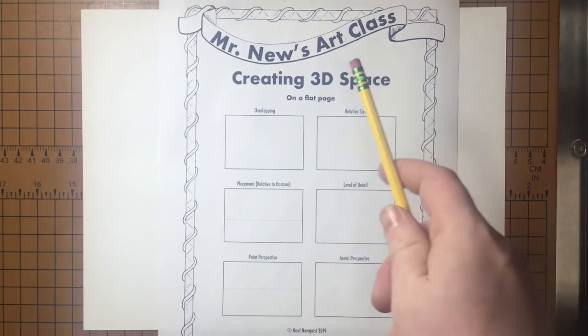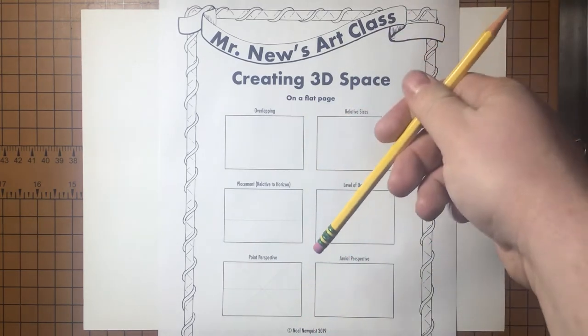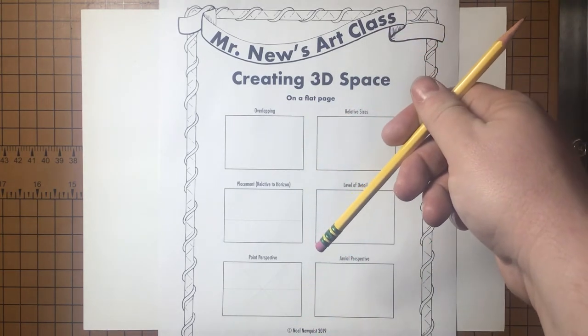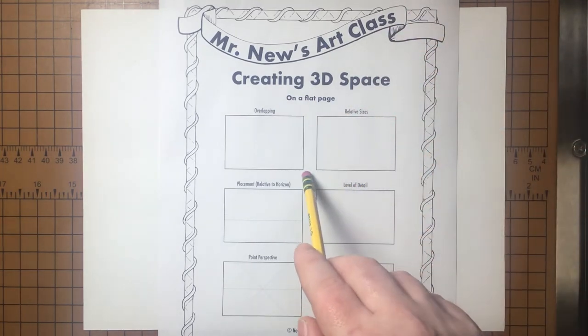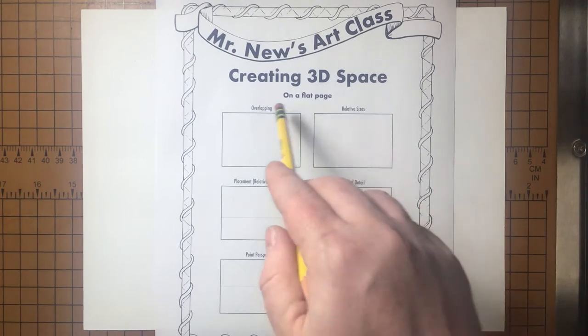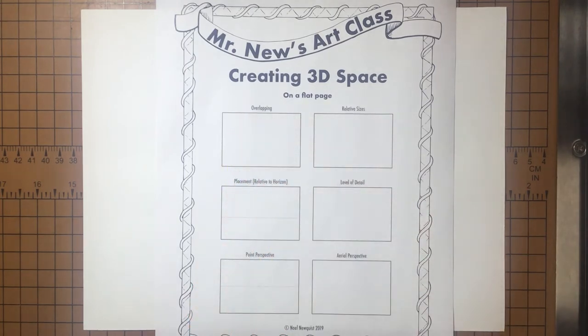And if you want a copy of this sheet, check the link in the description below. Or you can just make your own thumbnail boxes on any old paper.